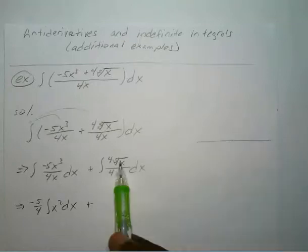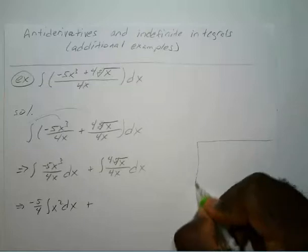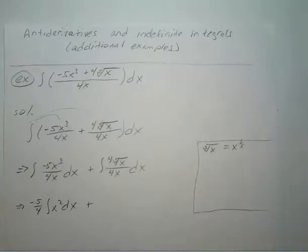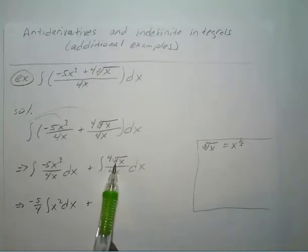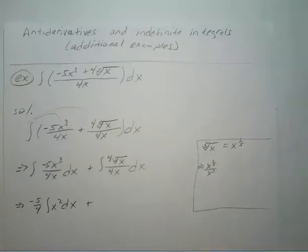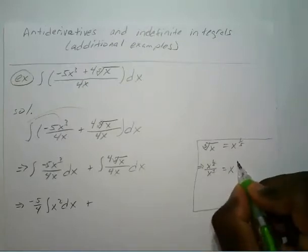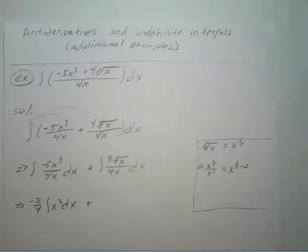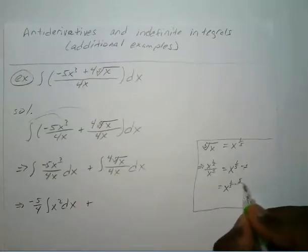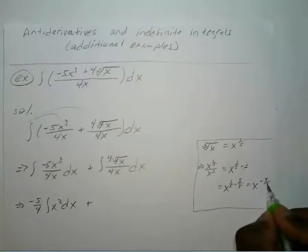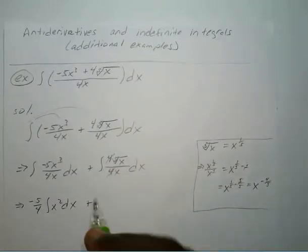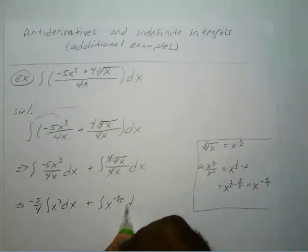Plus we can simplify the other term. The fifth root of x is just x to the one-fifth power, divided by x to the first power. So we have x to the one-fifth power divided by x to the first, which equals x to the one-fifth minus 1 power — that's x to the negative four-fifths power. Since your fours cancel, this becomes the integral of x to the negative four-fifths power with respect to x.